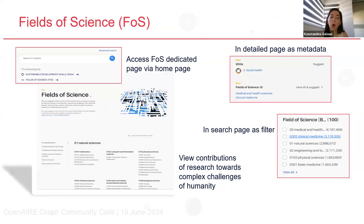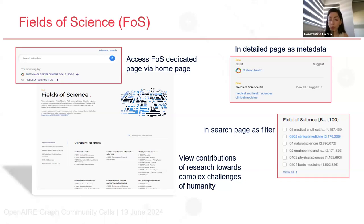From the home page, under the search form, you can see a link to the fields of science browse page, where you can see the top three levels of the hierarchy and click on each to navigate to the search page with that specific field of science filtered. In the detailed pages as well, there are fields of science as metadata, such as medical and health sciences or clinical medicine.